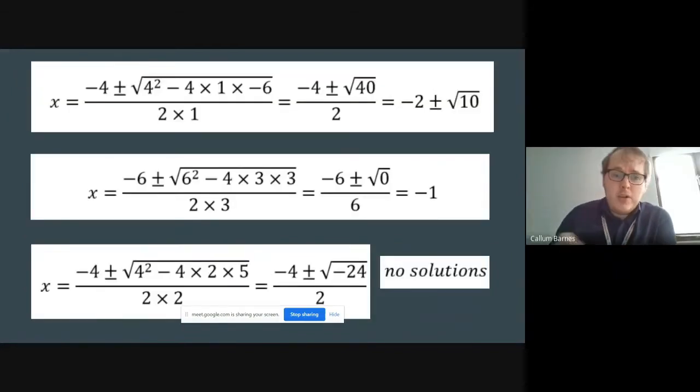Thanks, Simon. So as you can see here, we have got all three methods done for you, subbed into the quadratic formula. And then at the end, as you can see here, we have our solution. So for the first one, we've got a surd form. You might have a decimal, but it's better in this form. And we'll see why shortly. But this first one was minus two, plus or minus root ten. So you get two solutions. In the second one, there was just minus one. So there was one solution.